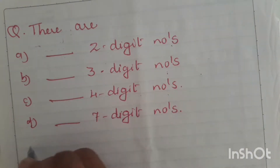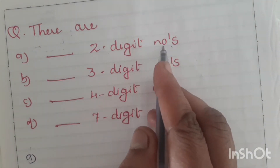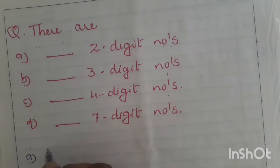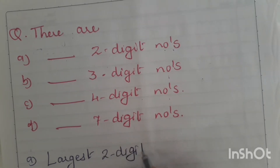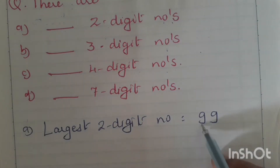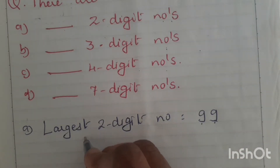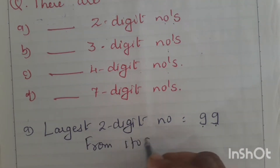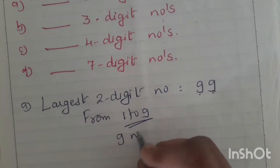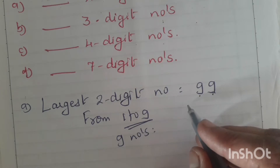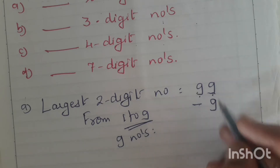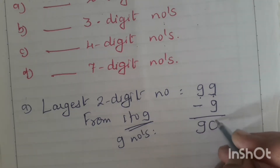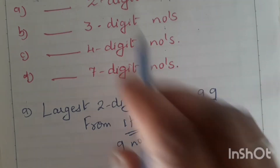Now let's go with the first question: how many 2-digit numbers are there? The largest 2-digit number is 99. Out of these 99 numbers, numbers from 1 to 9 — that is, altogether 9 numbers — are 1-digit numbers. So these 9 numbers are to be excluded from 99, giving you 90 numbers which are 2-digit numbers.